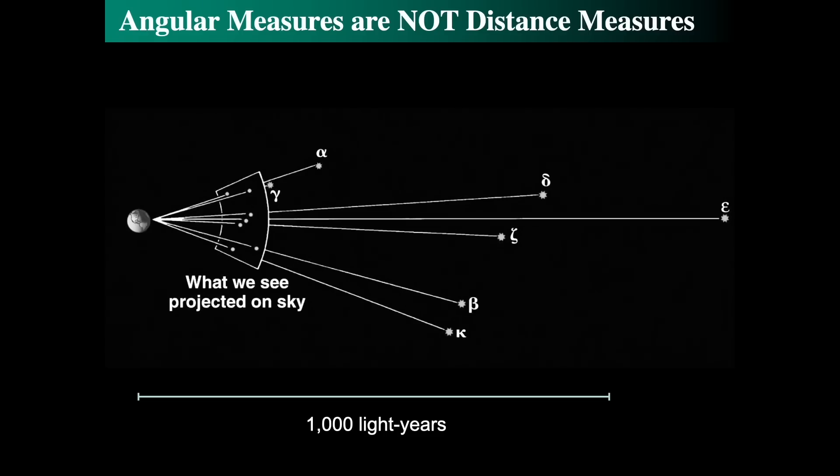Angular measurements are not distance measurements. They are projections on the sky. We can say on the sky because we're pretending that the sky is this celestial sphere. Things could be greatly distant from each other. Stars can be tens of light years away or thousands of light years away. We just remember that this is a fictitious concept.